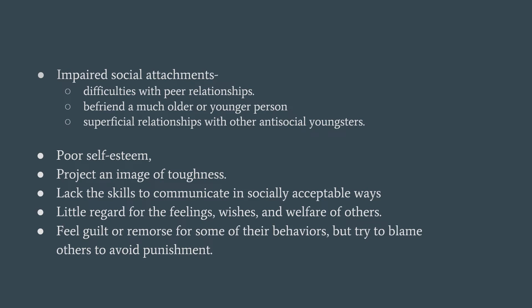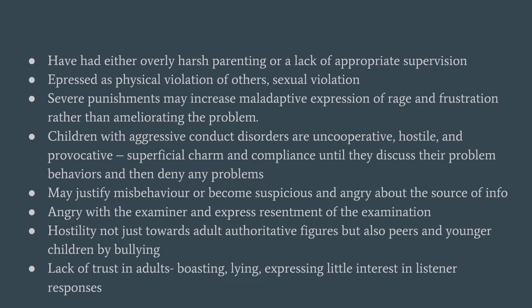Impaired social attachment is common in these children. They have difficulty with peer relationships and are often befriended by persons much older or much younger than their age, and the relationships are mostly superficial. These patients have poor self-esteem. They project an image of toughness on the exterior but lack the skills to communicate in a socially acceptable way. They have little wish or regard for the feelings or welfare of others. At times guilt or remorse is present, but they often try to put the blame on others to avoid punishment. On the parenting side, they might have had overly harsh parenting or a total lack of supervision. They express sexual violation and physical violation of others, and when punished for these behaviors, they express it as rage and frustration rather than trying to solve their problems.